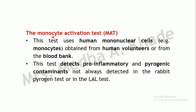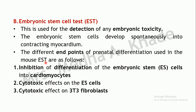The Monocyte Activation Test (MAT) uses human mononuclear cells—monocytes—which can be obtained from human volunteers or from a blood bank. In this test, pro-inflammatory and pyrogenic contaminants can be detected that might not even be detected by the rabbit pyrogen test or the LAL test, which is a key advantage.